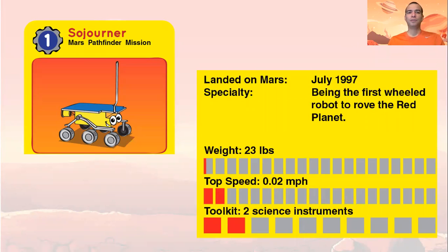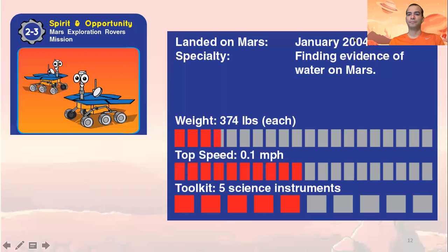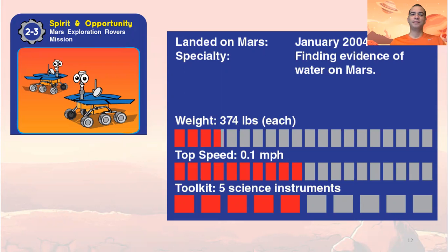The first one is called Sojourner. This is my favorite because it's a small one, like a microwave oven — only 23 pounds. This rover landed on Mars in 1997. The next rovers are called Spirit and Opportunity, finding evidence of water on Mars. Their weight is more than Sojourner and they have five science instruments.